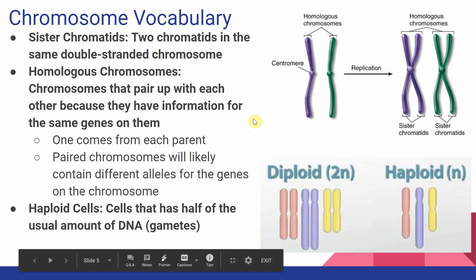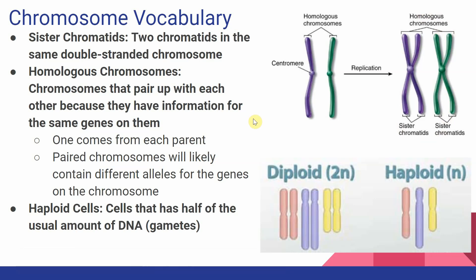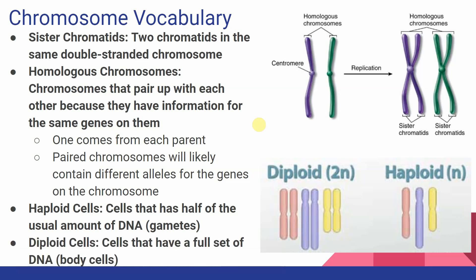Lastly, we have two more terms to cover. Haploid cells have half the usual amount of DNA, and those are most often going to be gametes — our sex cells, our sperm and egg cells. In contrast, diploid cells have a full set of DNA, and we think of these as being most of our body cells. Looking at the picture here, in a haploid cell we have one copy of each chromosome, while in a diploid cell we have two copies of each chromosome.